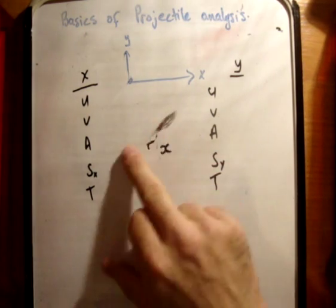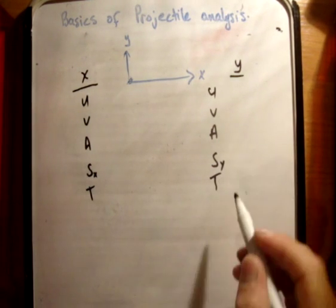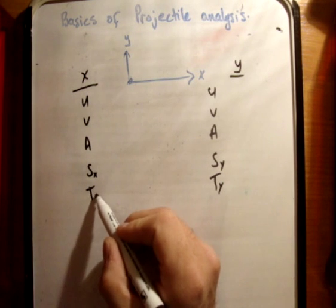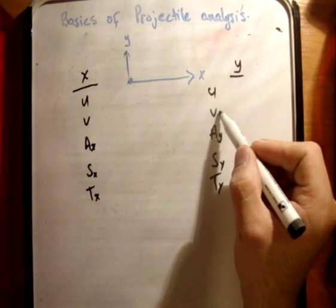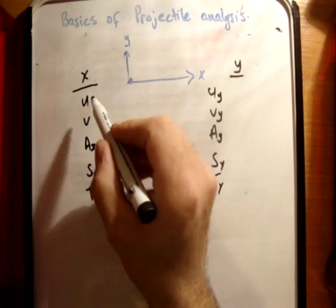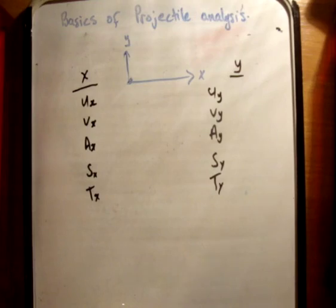Alright, so it's generally accepted that you use subscripts. So, you have S sub x, S sub y, T sub y, T sub x, A sub x, A sub y, V sub y, U sub y, U sub x, and V sub x, like that.